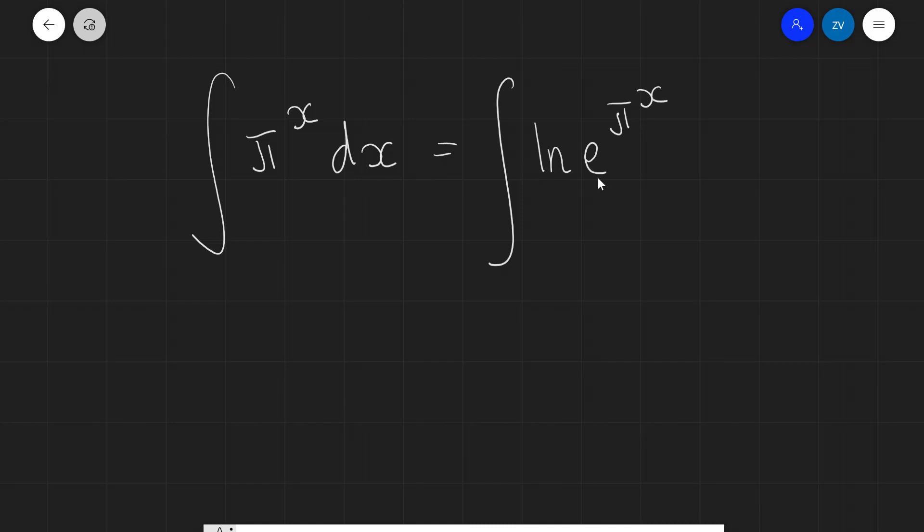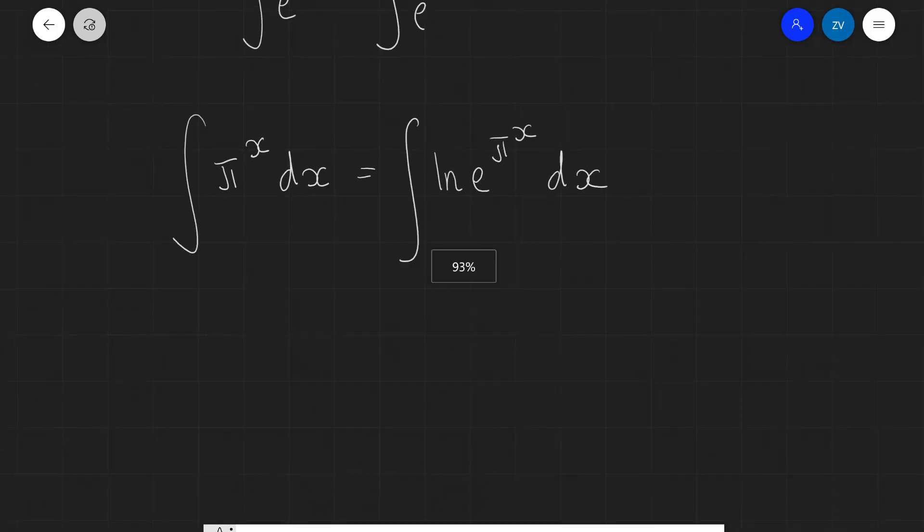Because remember ln of e, they're inverse functions, so ln of e^(π^x) is actually just equal to π^x. I'm not going to forget the dx sign.